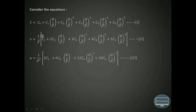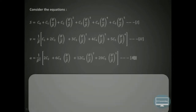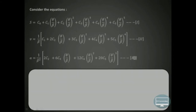Up until now we have derived the expressions for displacement, velocity, and acceleration — these are equations 1, 2, and 3. We now use the boundary conditions to find the six constants C0, C1, C2, C3, C4, and C5. We have 6 constants and 6 boundary conditions, so let us apply them one by one.